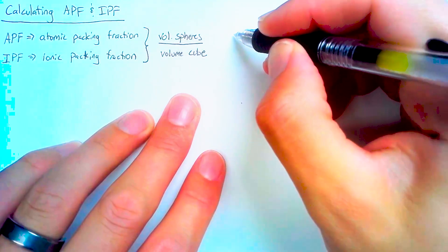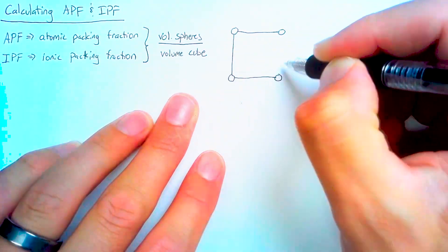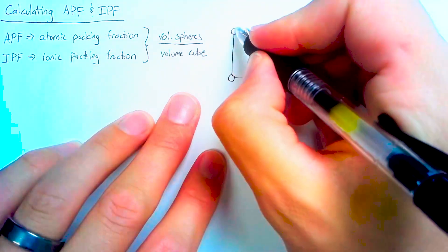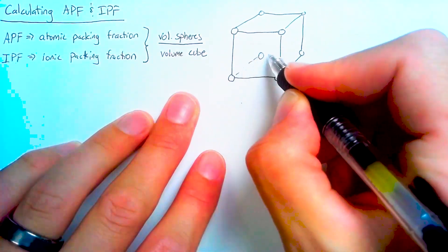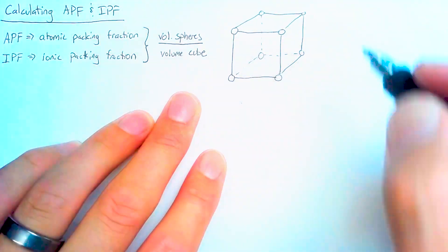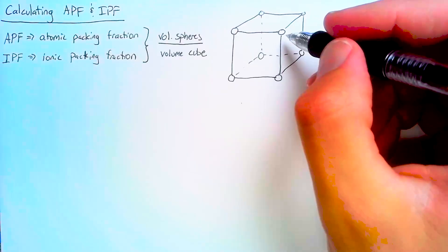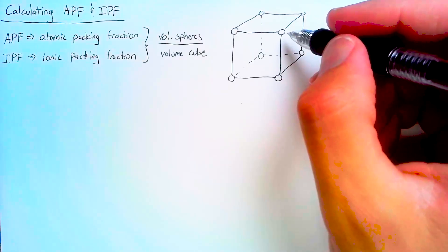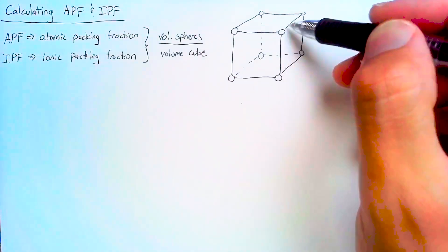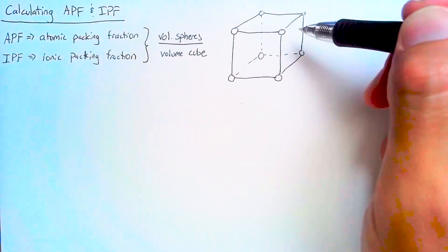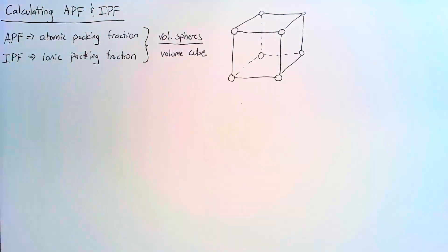Let's draw a cubic lattice. To start off, we're going to use a simple cubic, and then we can add to that pretty easily. In order to get the volume of the spheres, we just need to calculate how much of each sphere is inside the cube, and then count all those pieces up.